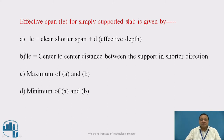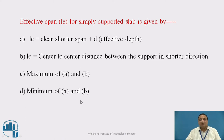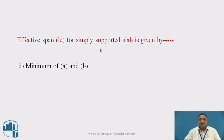Here is a question: The effective span LE for a simply supported slab is given by — Option A: L equals clear shorter span plus d (effective depth); Option B: L equals center-to-center distance between the supports in the shorter direction; Option C: maximum of A and B; Option D: minimum of A and B. The correct answer is Option D — minimum of A and B.